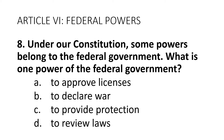Article 6: Federal Powers. Question 8: Under our Constitution, some powers belong to the federal government. What is one power of the federal government? A. To approve licenses. B. To declare war. C. To provide protection. D. To review laws.